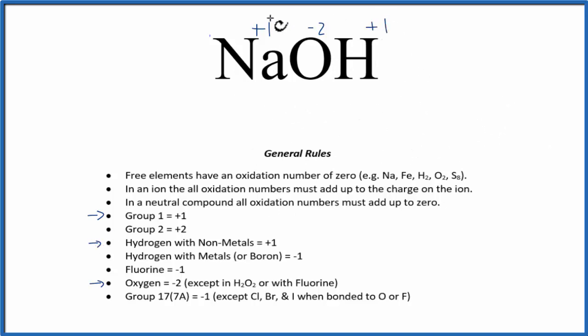Since NaOH is a neutral compound, it doesn't have an overall charge. In a neutral compound, all oxidation numbers need to add up to zero. We have plus 1, minus 2, and plus 1. That adds up to zero, which makes sense and follows our rules.